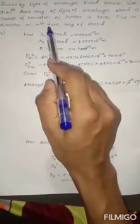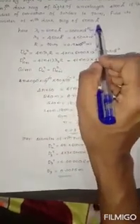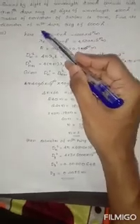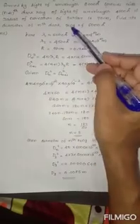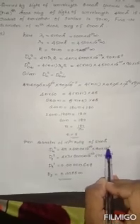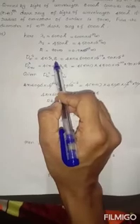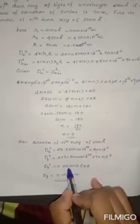With n = 3, we can find the diameter of the 3rd dark ring for λ1 = 6000 Angstroms: d3² = 4 × 3 × 6000 × 10⁻¹⁰ × 90 × 10⁻². Solving, d3 ≈ 0.0025 meters. This is the diameter of the 3rd dark ring.